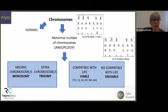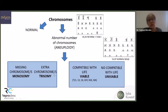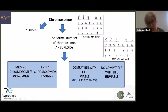It can happen that embryos have missing chromosomes, which we call monosomy. For example, a monosomy of chromosome 13 means the embryo has only one chromosome 13 instead of two. Or we can have extra chromosomes, which we call trisomy. So instead of two chromosomes 13, if the embryo has three, then it is an embryo with trisomy for chromosome 13.